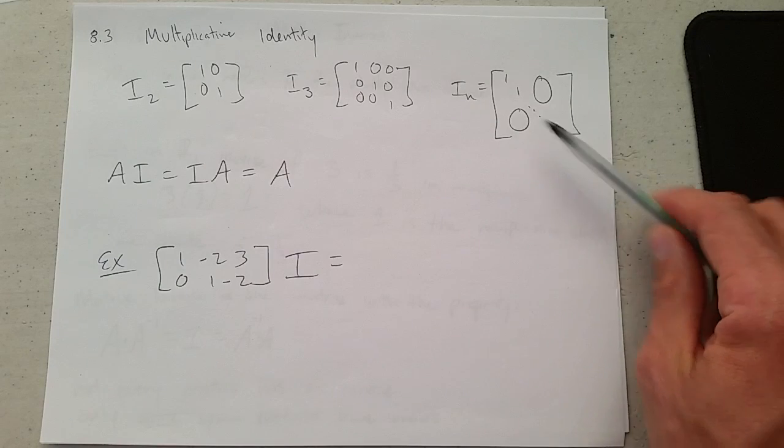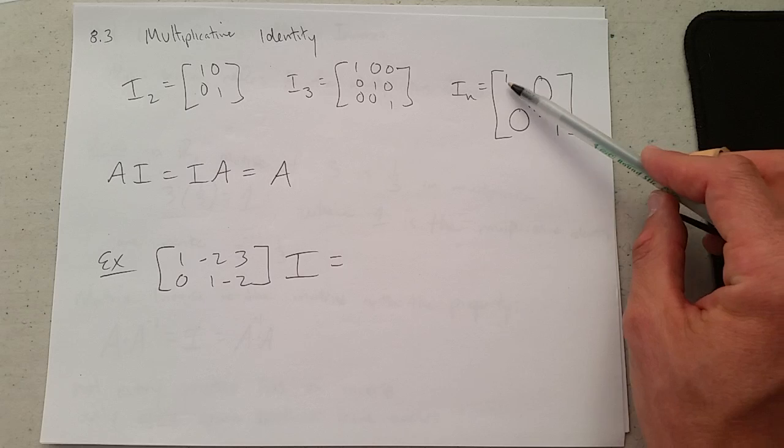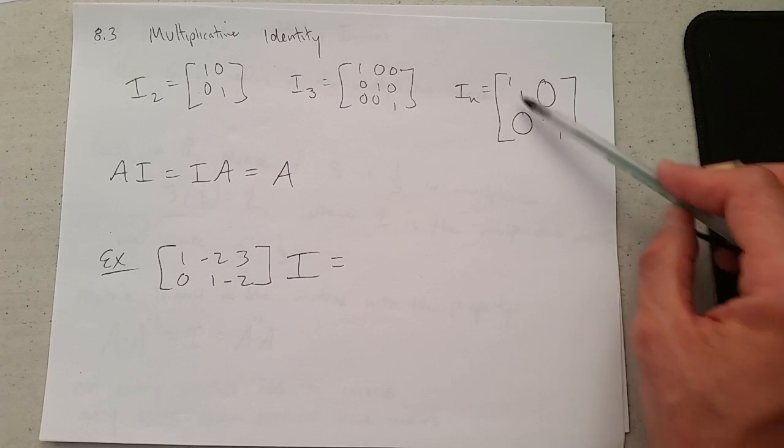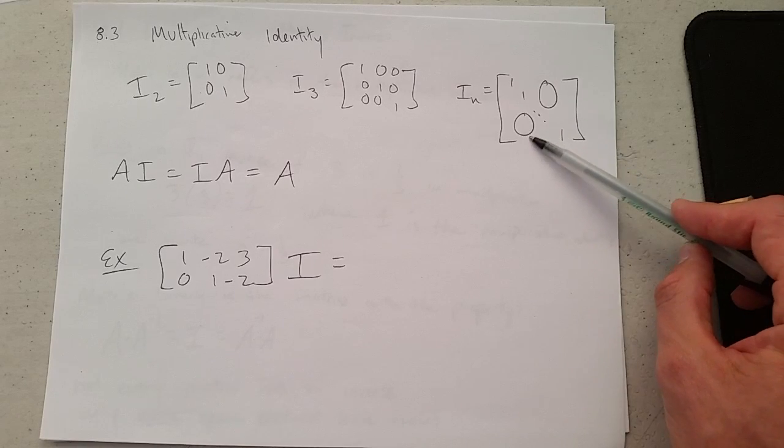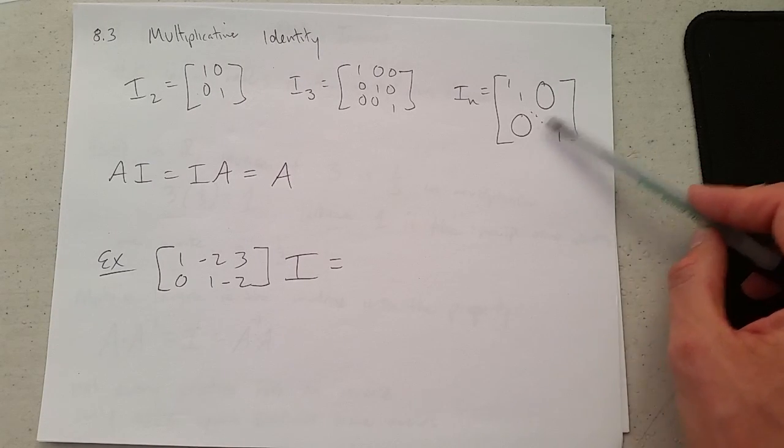If you have n by n, you can't just draw n 1s, so you just show that by dot, dot, dot, meaning the 1s keep going, and we just get a little bit lazy here and just write really big 0s, meaning everything else is 0.